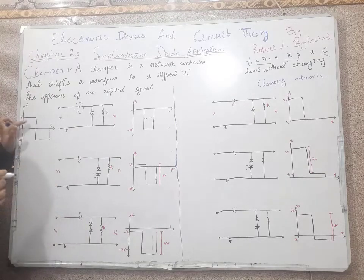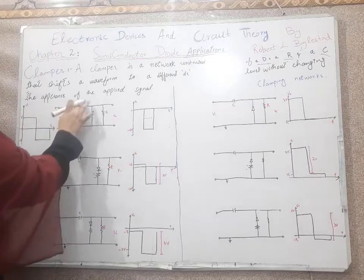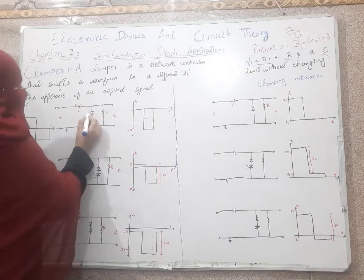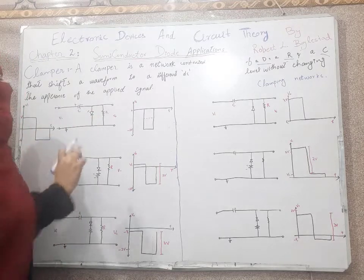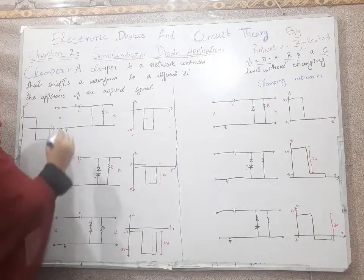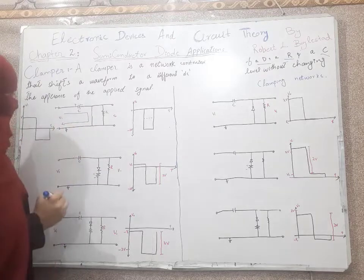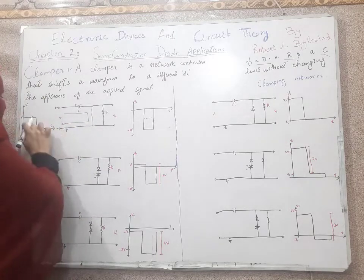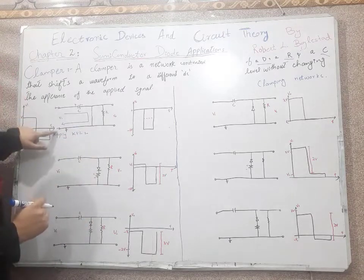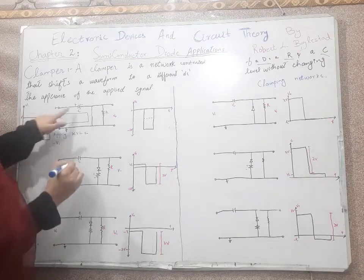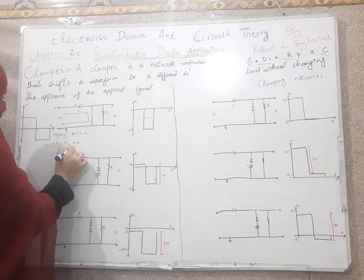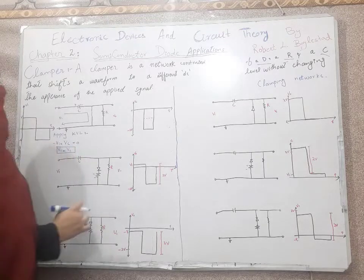For the positive half cycle, there is positive and negative. Our diode will be forward biased — its P-type is connected to positive and N-type is connected to negative terminal, so it will be forward biased. We replace it as a short circuit, and current flows in this direction. Applying KVL: minus Vi plus Vc equals 0, so Vi equals Vc.